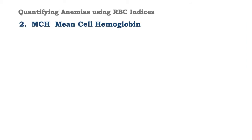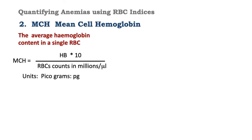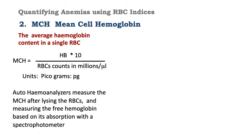Let's look at the MCH, mean cell hemoglobin. This is defined as the average hemoglobin content in a single red blood cell. It's obtained by multiplying hemoglobin concentration times 10, divided by the red blood cell count in millions. The units of measurement are picograms. When auto-hemoanalysers are used to measure mean cell hemoglobin, the RBCs are first lysed, and the free hemoglobin is measured based on its absorption with a spectrophotometer.